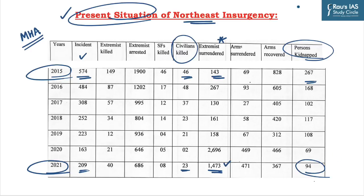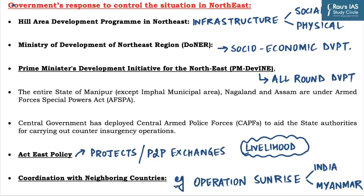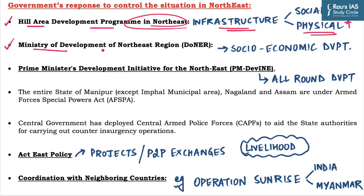Regarding the government's response to control insurgency in Northeast, the first initiative is the Hill Area Development Program, focusing on social infrastructure like hospitals, schools, and colleges, and physical infrastructure like roads, railways, and electricity. The government also established the Ministry of Development of Northeast Region, known as DoNER, to accelerate socio-economic development and ensure growth parity with the rest of the country through connectivity, capacity building, and skill-based industry. The government also brought out the PM-DevINE scheme, focusing on all-round development of the Northeast region and making it an economic hub connecting Southeast Asia under the Act East policy.